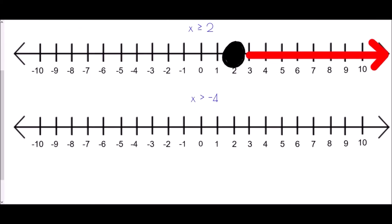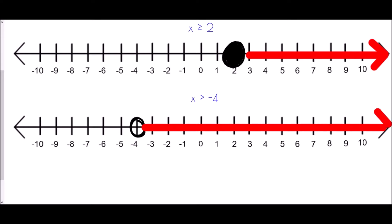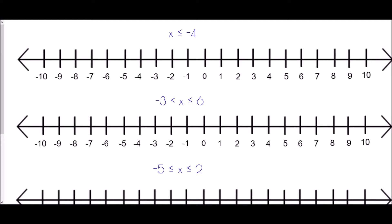Next, x is greater than negative four. The number involved is negative four, so we draw a circle there. It doesn't have an equal sign, so we don't color it in. Since it is greater than negative four, we draw an arrow continuing to the right. Then for x less than or equal to negative four, we draw a circle at negative four, color it in because of the equal sign, and the arrow goes to the left.